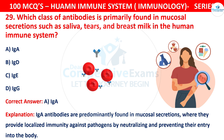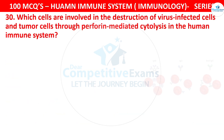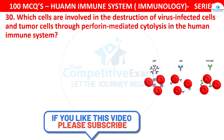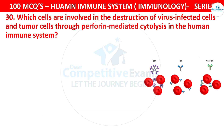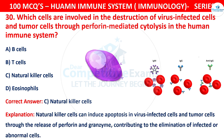Question 30: Which cells are involved in the destruction of virus-infected cells and tumor cells through perforin-mediated cytolysis in the human immune system? The options are B cells, T cells, Natural killer cells, or Eosinophils. The correct answer is C, that is Natural killer cells. Natural killer cells can induce apoptosis in virus-infected cells and tumor cells through the release of perforin and granzyme, contributing to the elimination of infected or abnormal cells.